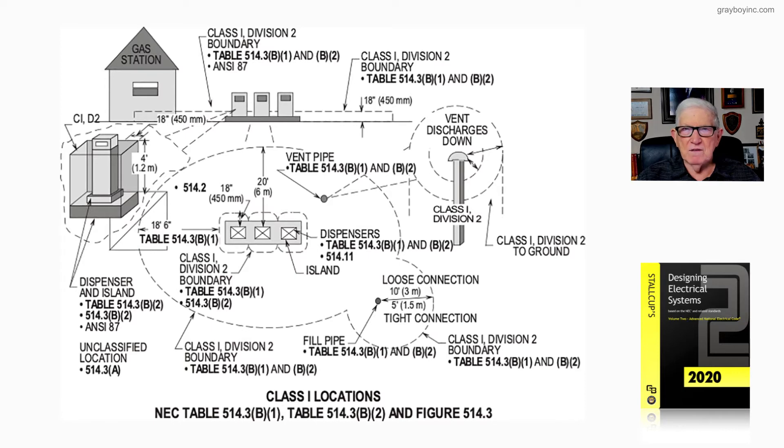But now looking at the island itself with the dispensers, notice that you're going to count out 18 inches, because that's a Class 1 Division 2, and then from there it's 18 feet 6 inches on out, giving you a total of 20 feet overall.